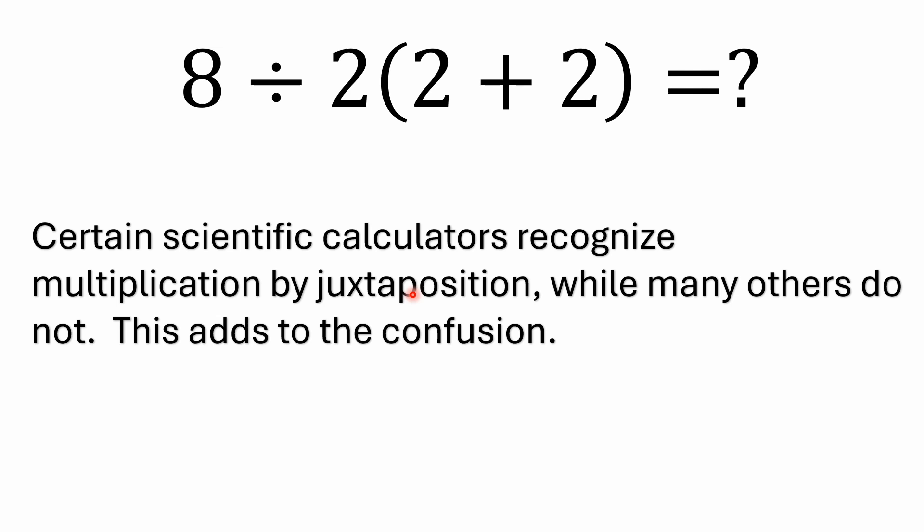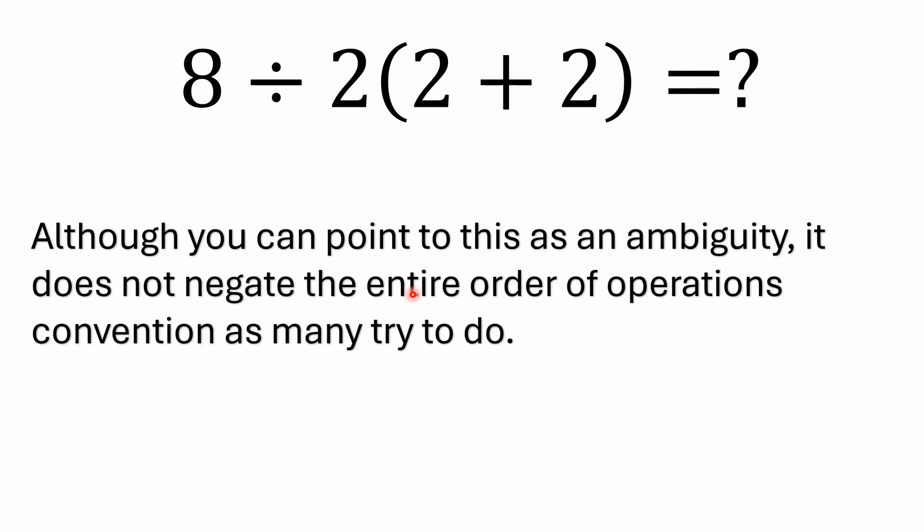These are not from dollar store calculators. These are actually from scientific calculators that are set up to handle multiple operations, the order of operations convention. We've got to be really careful on calculators. Cheap dollar store calculators really don't allow you to enter in multiple operations and get the correct answer, so a lot of people end up getting wrong answers and they trust a calculator that they don't understand how to use properly. There are scientific calculators that do recognize multiplication by juxtaposition, and although you can point to it as an ambiguity, it doesn't negate the entire order of operations convention, which is something a lot of people do try to do.